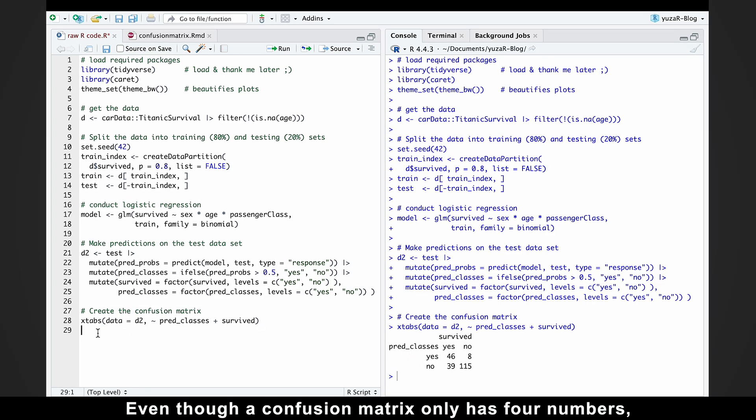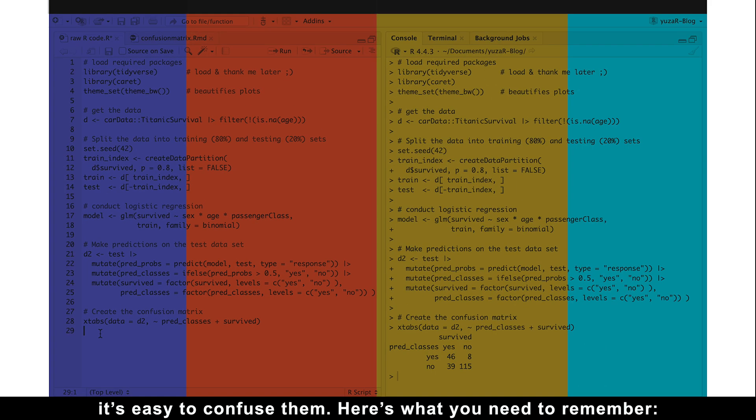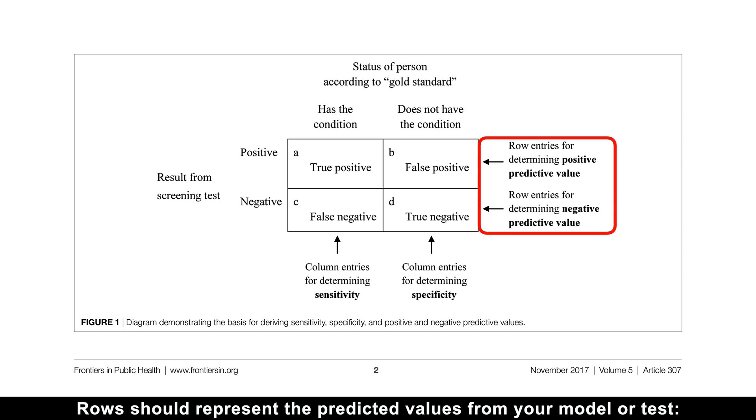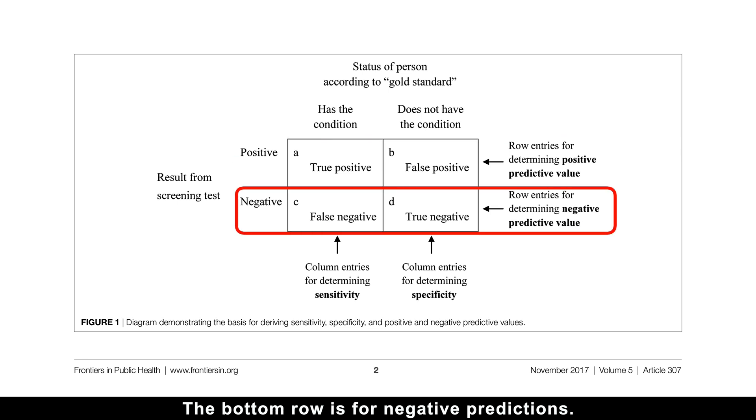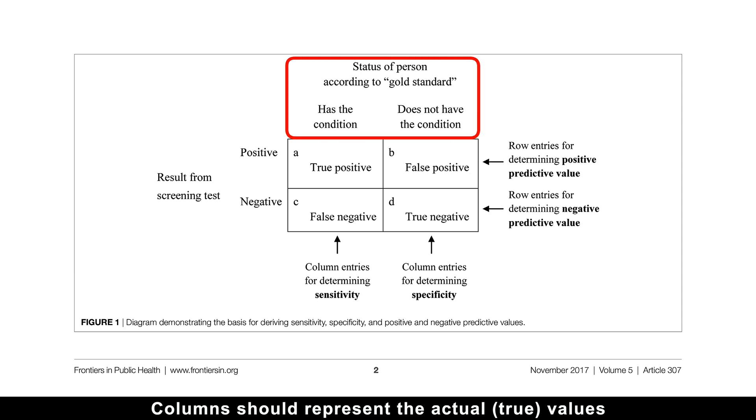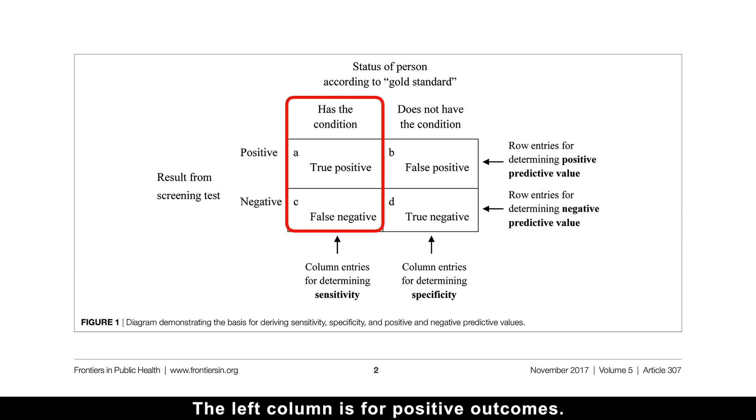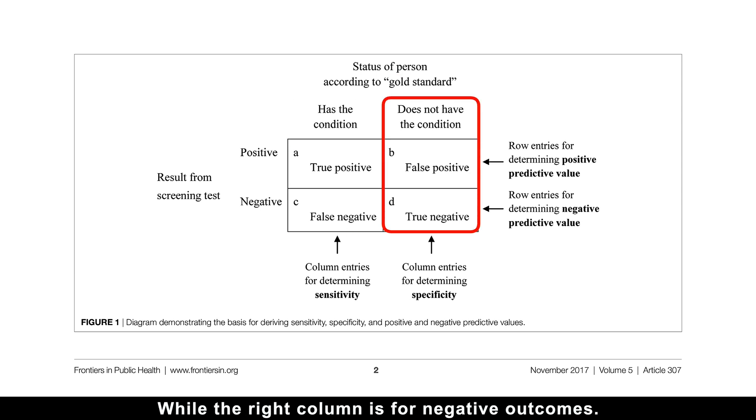Be careful though, even though a confusion matrix only has four numbers, it's easy to confuse them. Here's what you need to remember. Rows should represent the predicted values from your model or test. The top row is for positive predictions, the bottom row is for negative predictions. Columns should represent the actual true values, also called the gold standard. The left column is for positive outcomes, while the right column is for negative outcomes.